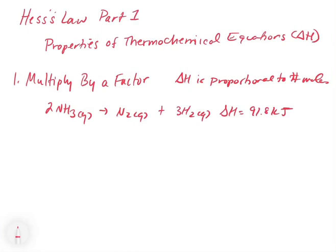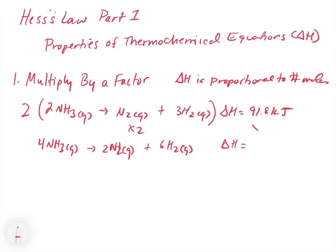Now let's say we multiplied this through by a factor. Let's take this entire reaction and multiply it by 2. What would we have to do to delta H if we did that? We'd have 4NH3 gas goes to 2N2 gas plus 6H2 gas. We're taking the first one and multiplying it by 2. If delta H is proportional to the number of moles and we double the number of moles, we're going to have to double delta H.